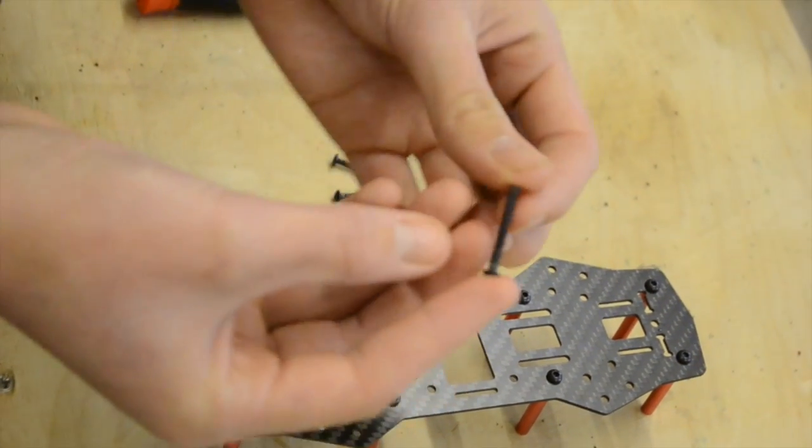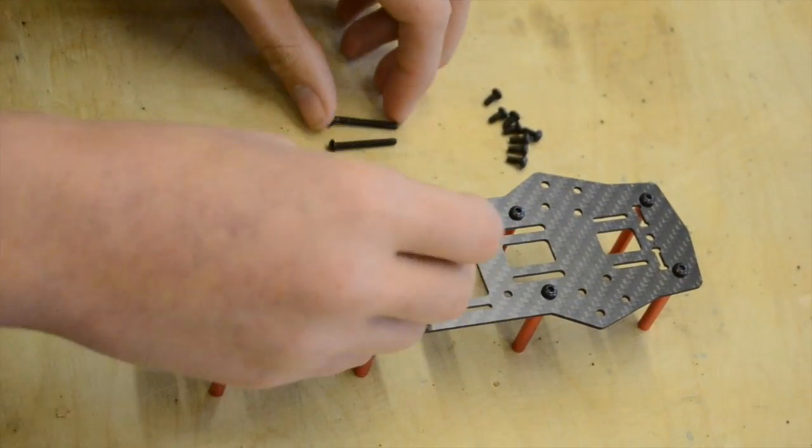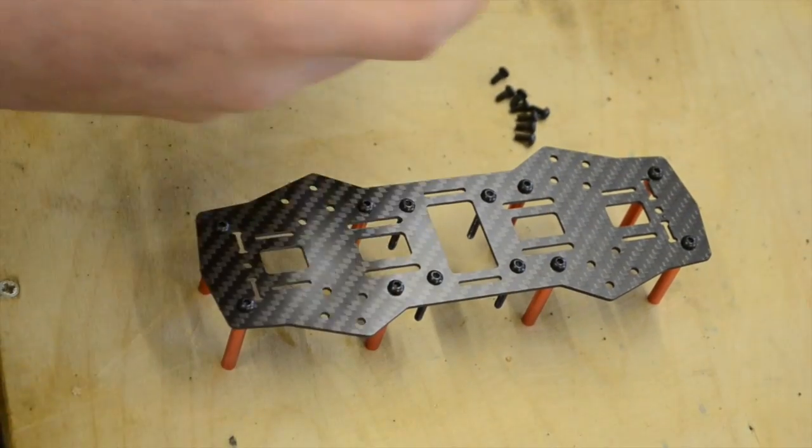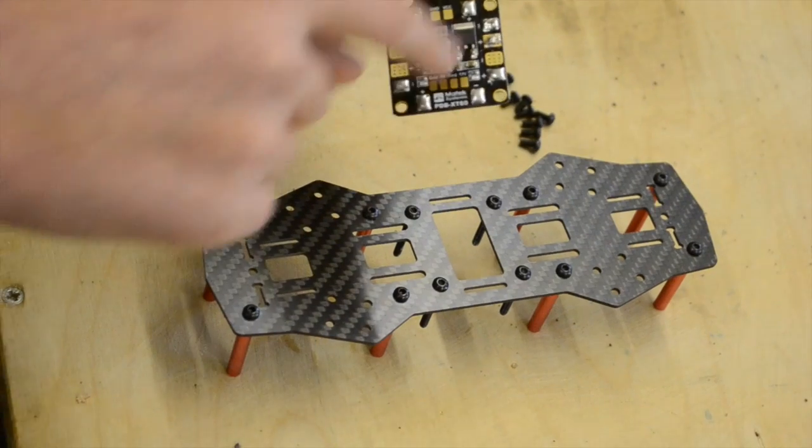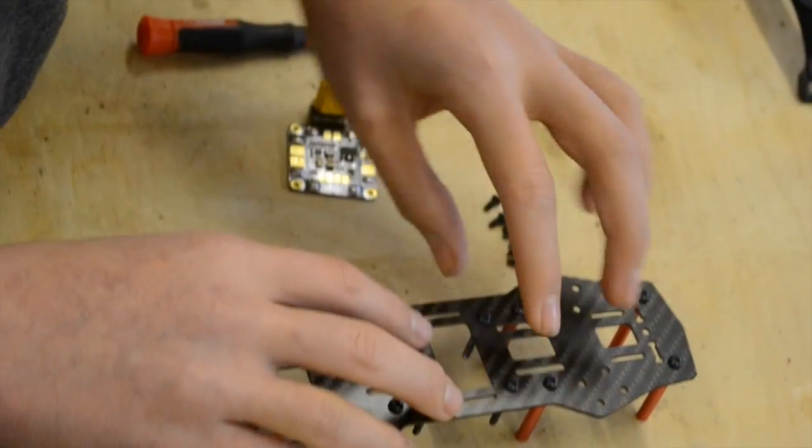And you've got these long bolts here, which you'll have to buy separately. I'll put links in the description. They go through these four holes in the middle here, which hopefully you haven't used. If you're getting a bit confused about it, they're the same distance apart as the four holes on the power distribution and Naze32 boards.